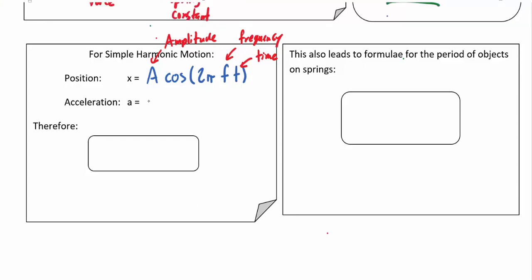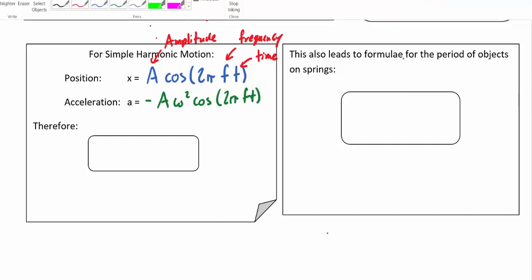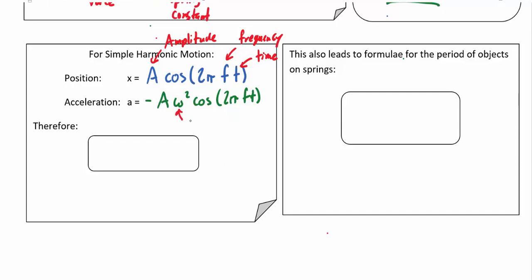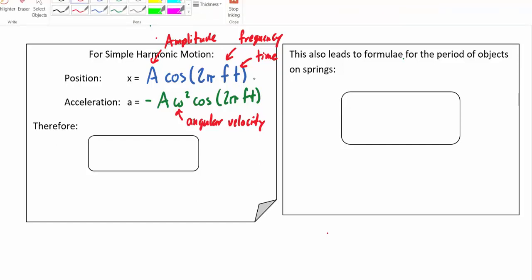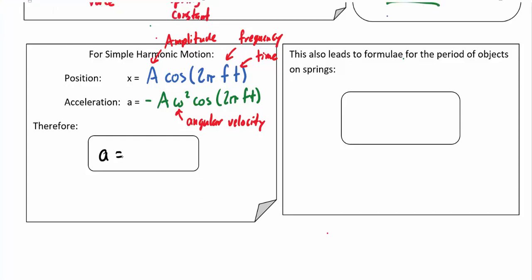The acceleration equals negative A omega squared cosine of 2π f t. Omega is the angular velocity from rotational motion. To get from the position formula to the acceleration formula takes calculus, but the key point is that the acceleration for anything in simple harmonic motion equals negative omega squared times x — acceleration is directly related to displacement.